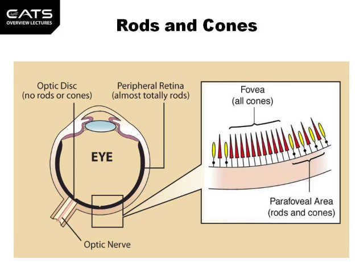Surrounding the foveal area is the para-foveal area. This contains more rods, which are responsible for night vision and the detection of movement.